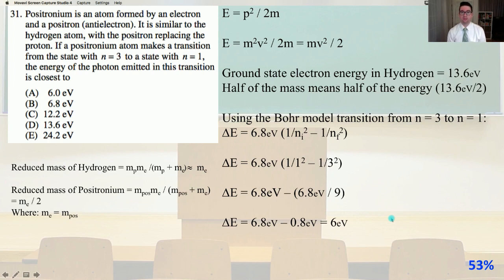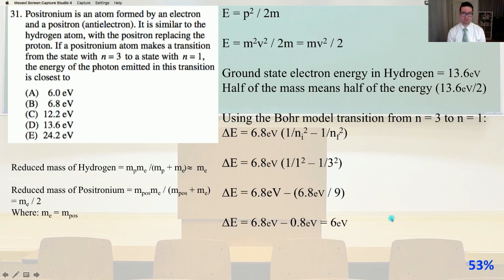We know that E equals p squared over 2m, which is Hamilton's way of expressing the energy. So E is going to equal m squared v squared over 2m equals mv squared over 2, which is everyone's usual way of looking at it. So the ground state electron energy in hydrogen, which everybody should know and we just have to memorize, equals 13.6 electron volts. Half of the mass means half of the energy, so 13.6 electron volts divided by 2.